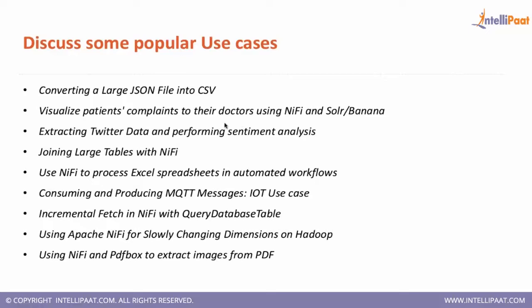The second use case is visualizing patient complaints. I've used just a get file processor, assuming the large JSON is already present. But if you want to get it through Mongo, there is a Get Mongo processor. Most of the time in this kind of implementation, people are getting it from MongoDB, so you can just configure Get Mongo and get it from there.